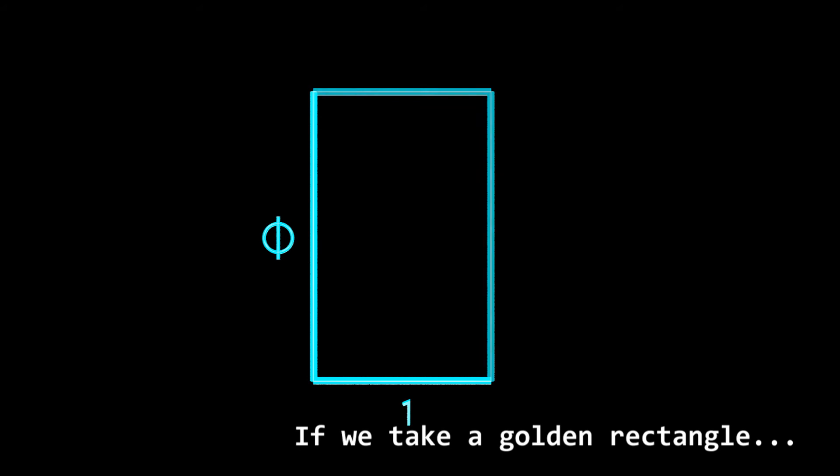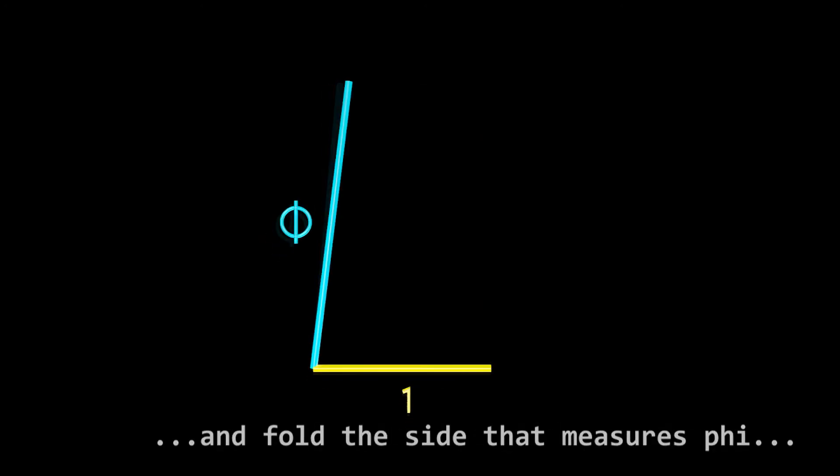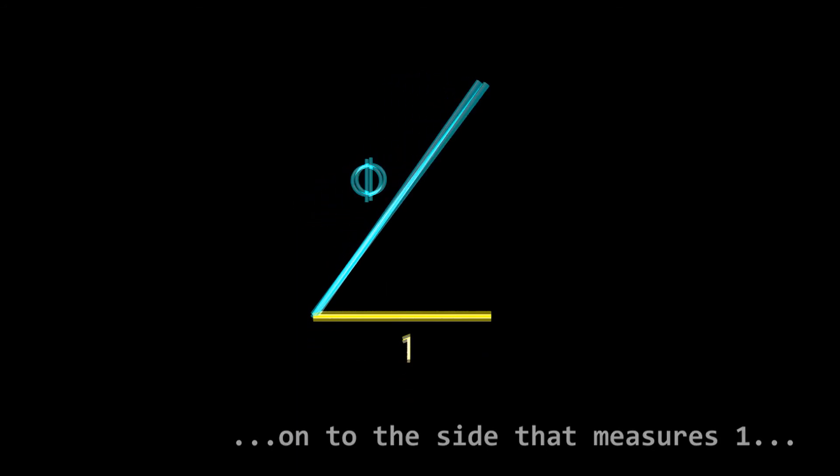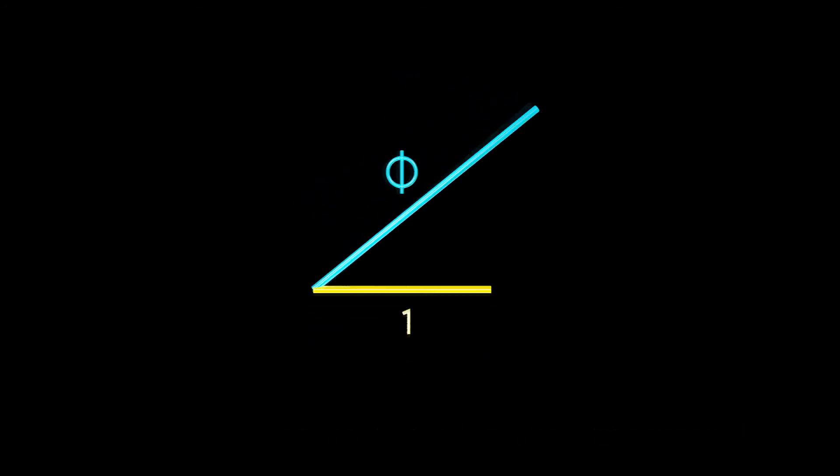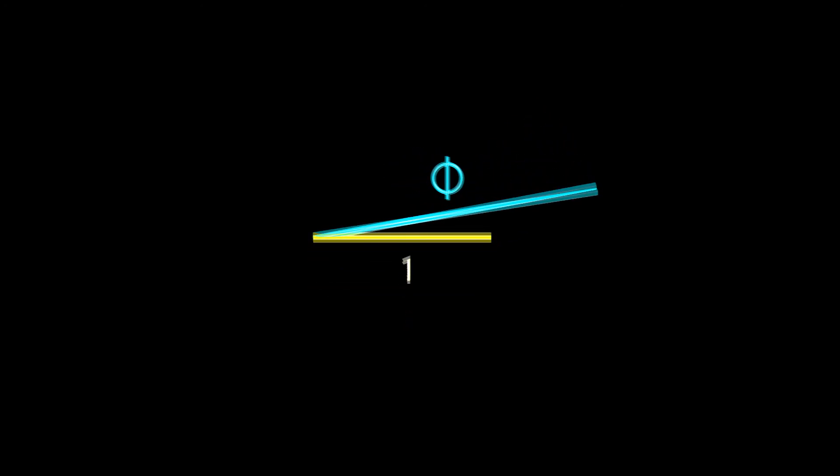If we take a golden rectangle, and fold the side that measures Phi onto the side that measures one, we end up with a segment with a long side and a short side.